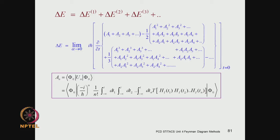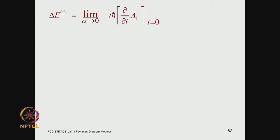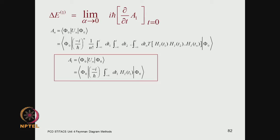It is quite a complex mathematical system. To get familiar with the techniques, we will first work only with the first order terms. The first order correction to energy is given by: the limit alpha going to zero of ih-bar times del/del-t, taking only the first order term — del/del-t of A1 — with this time derivative taken at t equals zero.